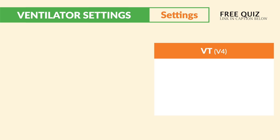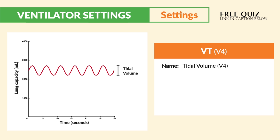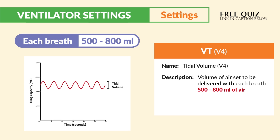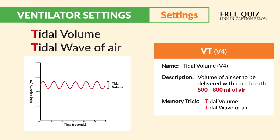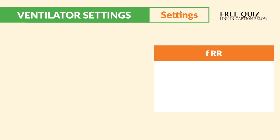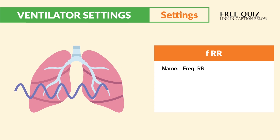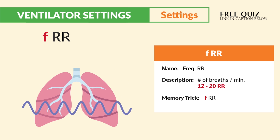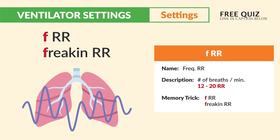Now for the main settings. First is VT — tidal volume — the volume of air set to be delivered with each breath. Normally 500 to 800 mL of air per breath. Memory trick: think a tidal wave of air. Next is FRR — frequency of respirations — the number of breaths per minute. Normal setting is 12 to 20, just like normal vital signs. Memory trick: FRR stands for 'freaking respiratory rate.'